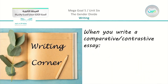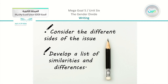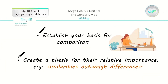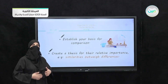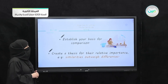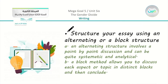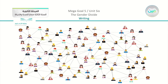We have our writing tips for when you write a comparative or contrastive essay. First, consider the different sides of the issue. Develop a list of similarities and differences. Establish the basis for comparison — mention the two people and then start the comparison. Create a thesis for the relative importance, meaning mention the similarities and whether they outweigh differences. Then structure your essay using either an alternating or a block structure.